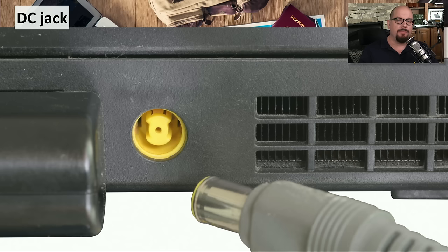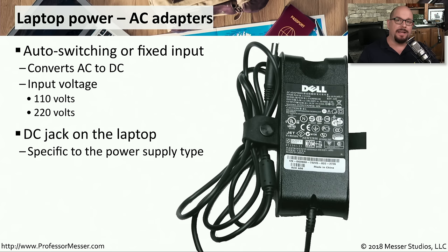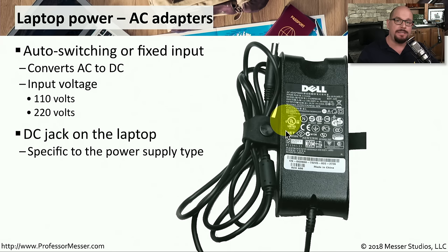Our computers need direct current to operate. Desktop computers have a power supply built into the case, but laptops don't have that room, so power conversion is done on an external device that provides DC power directly into the laptop through a power interface — which can vary between laptop models; this one has a rounded yellow connector on the back. The external power supply converts AC from the wall into DC for the laptop, and is usually available in 110-volt or 220-volt versions depending on where you are in the world. These power supplies are very specific to the make and model of the laptop, so make sure you replace it with a compatible one.